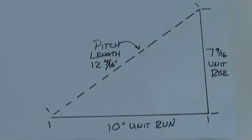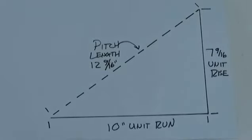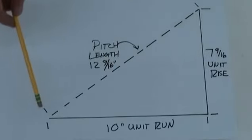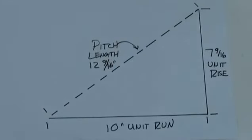So in this demonstration we're going to use this example here, which has a 7 and 9 sixteenths inch unit rise, a standard 10 inch unit run, and based on those two numbers our pitch length from corner to corner diagonal is 12 and 9 sixteenths.